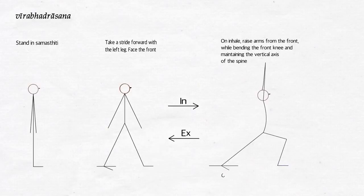On exhale, lower the arms from the front while straightening the front leg. Bring the front foot back to the Samastiti position. This posture may be repeated a certain number of times on either leg.